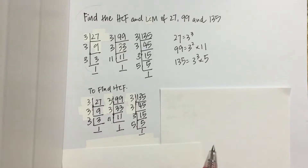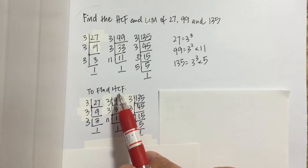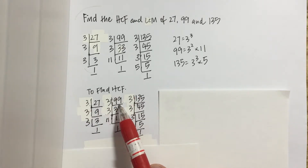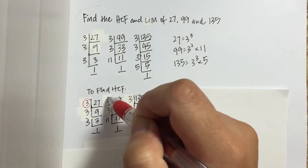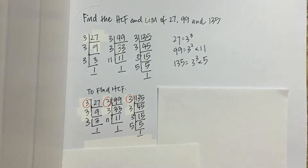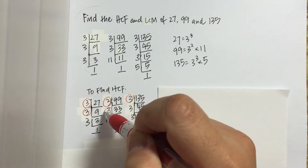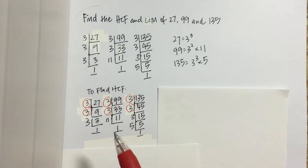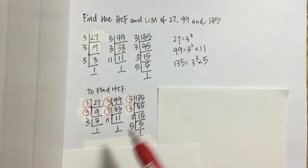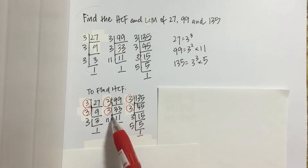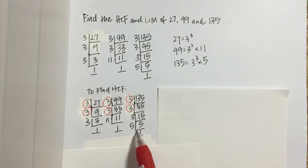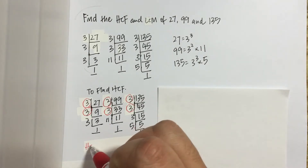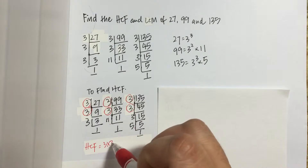Now we are going to find the highest common factor, that is HCF, of the three numbers 27, 99 and 135. One method is to circle the common factors that appear across the three numbers. First we have 3, and next another 3. Checking for other common factors — there's no 3 here, and 11 only appears in one number, and 5 only appears in one number. Therefore HCF is equal to 3 times 3, which gives us 9.